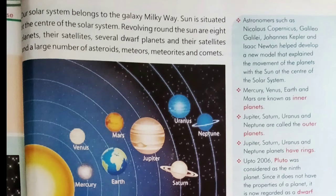The sun is situated at the center of the solar system. Revolving around the sun are 8 planets, their satellites, several dwarf planets and their satellites. In addition, a large number of asteroids, meteors, meteorites and comets also revolve around the sun.